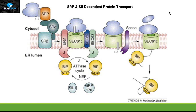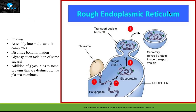Once the protein is present in the ER lumen, a lot of different conformational changes occur that include folding, assembly into multi-subunit complexes, disulfide bond formation, glycosylation — meaning the addition of a sugar molecule on the protein — and the addition of glycolipids to some proteins that will attach themselves with the plasma membrane. These proteins, after post-translational modification, will bud off from the ER to go into their sub-organelles.